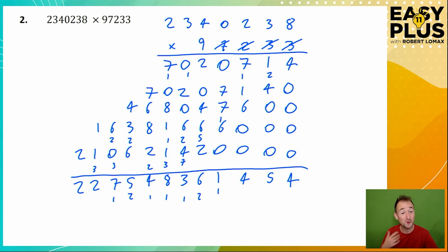And now it might be helpful to copy out our enormous answer while being careful not to introduce any new mistakes. So we've got 227,548,361,454.